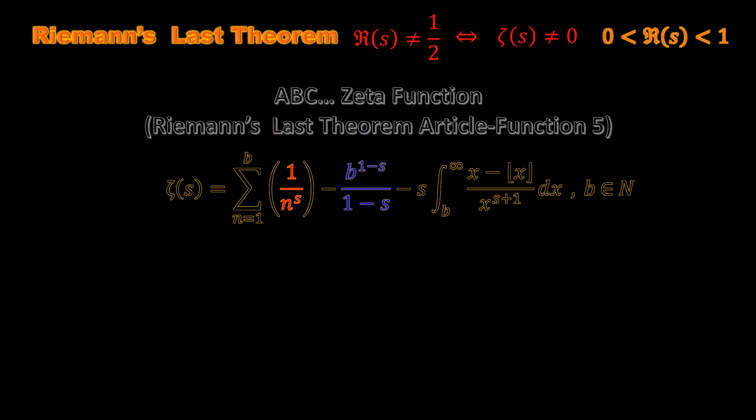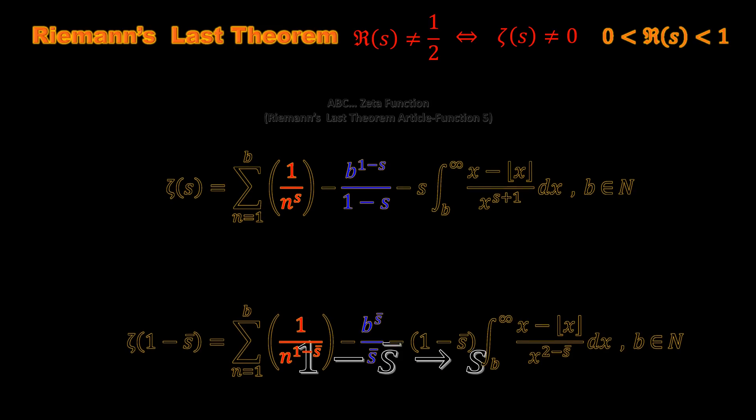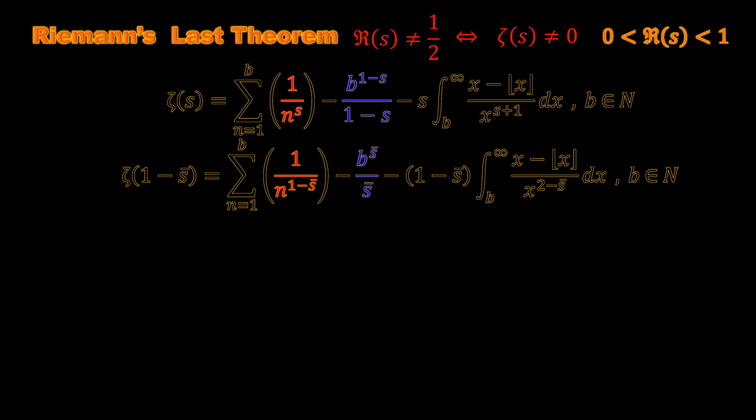This is the ABC zeta function that we can write it for 1 minus s conjugate. Let's keep these functions on the top. We know that if the zeta function equals zero, we can say zeta of 1 minus s conjugate is equal to zero as well.